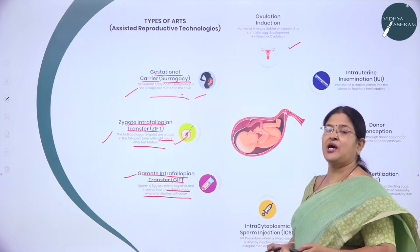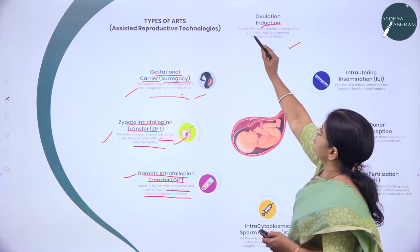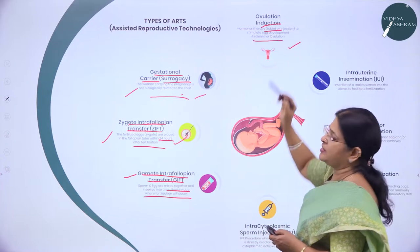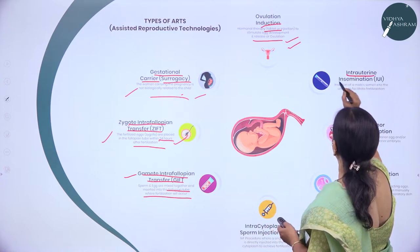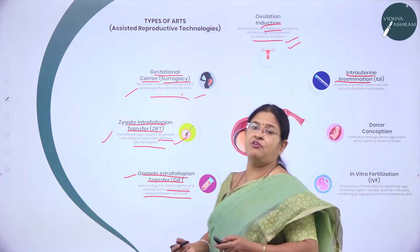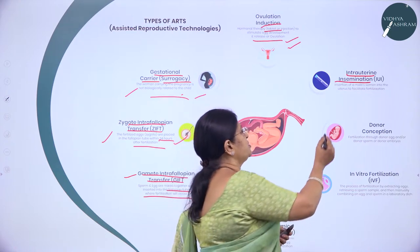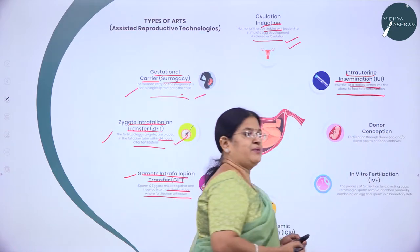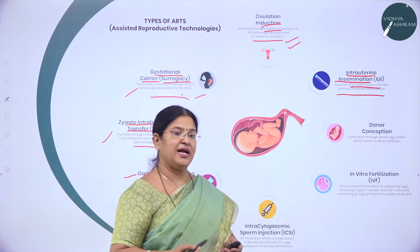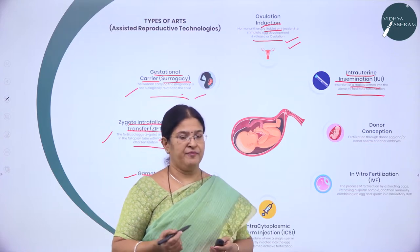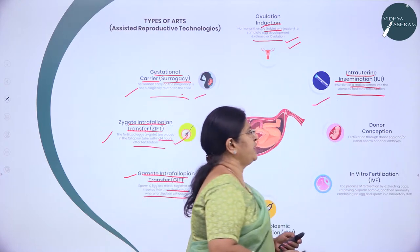Ovulation induction is an important step in IVF-ET where ovulation is induced using hormones. By introducing hormones into the ovaries, more eggs are produced. Hormonal therapy stimulates egg development and release of ova. Intrauterine insemination involves the insertion of the male's semen into the uterus to facilitate fertilization. Sometimes the female's cervical mucus may be hostile to the partner's sperms.